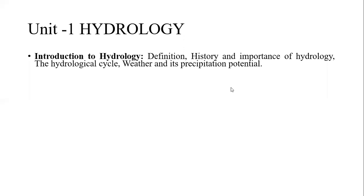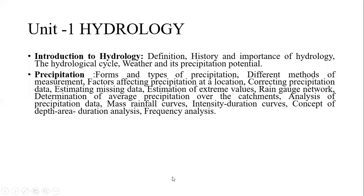The contents of Unit One are: introduction to hydrology — its definition, history and importance; the hydrological cycle; weather and precipitation potential; forms and types of precipitation; different methods of measurement; factors affecting precipitation; correcting precipitation data; estimation of missing data; estimation of extreme values; rain gauge network; determination of average precipitation over catchments; analysis of precipitation data; mass rainfall curves; intensity-duration curves; depth-area-duration analysis; and frequency analysis.